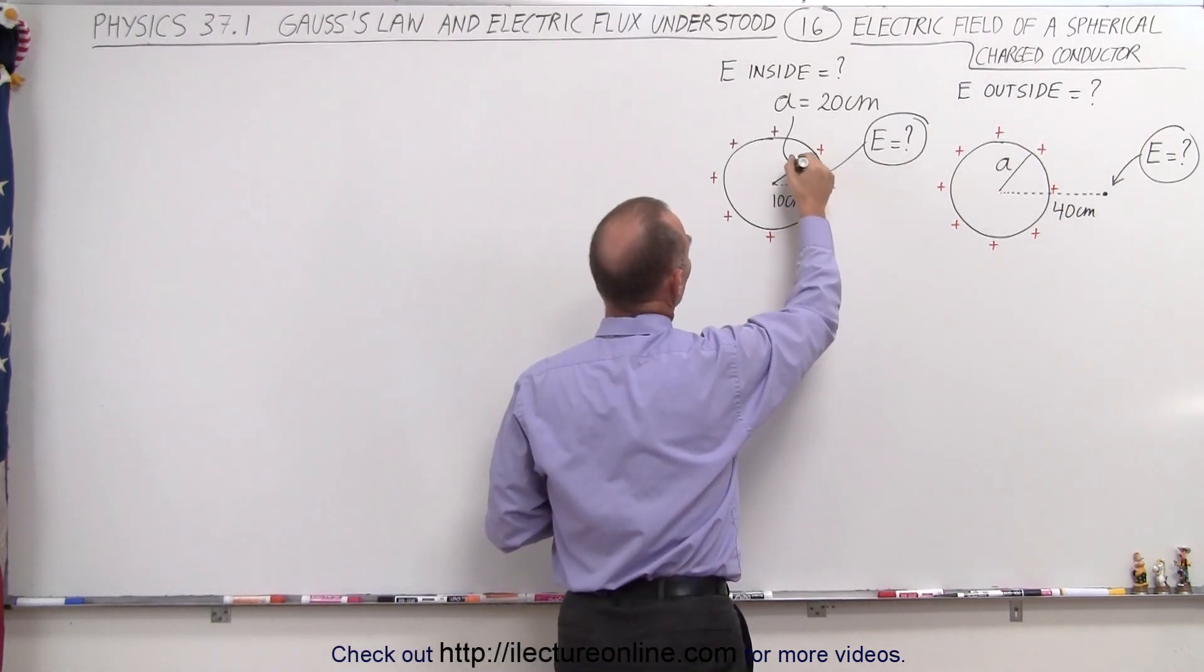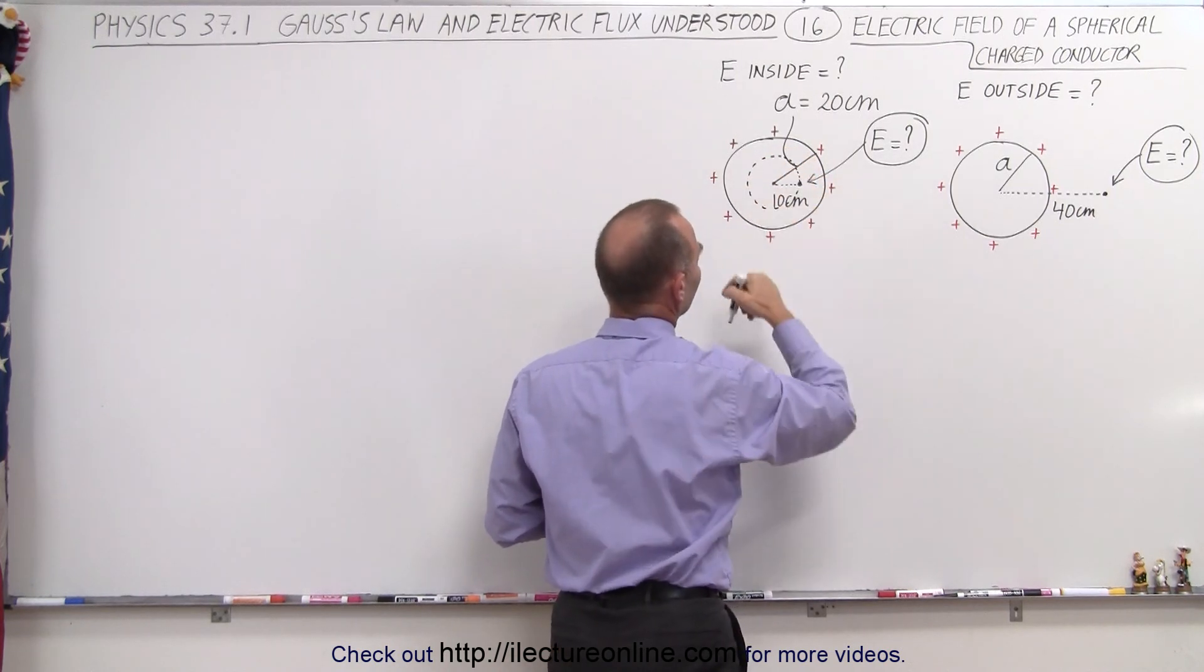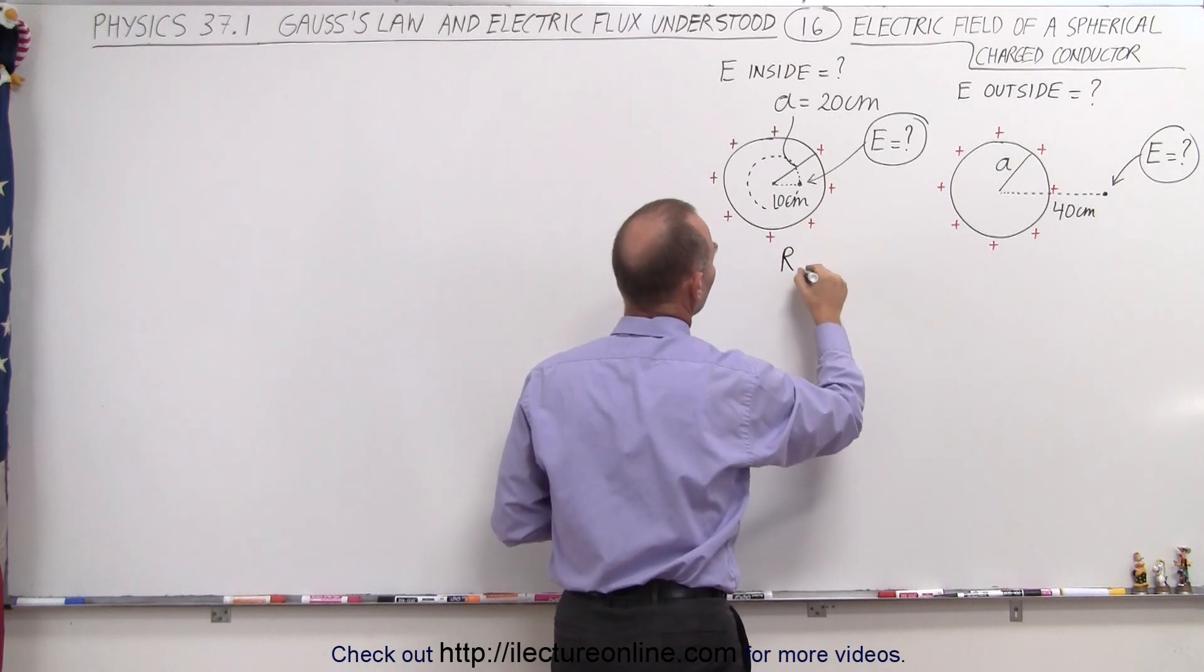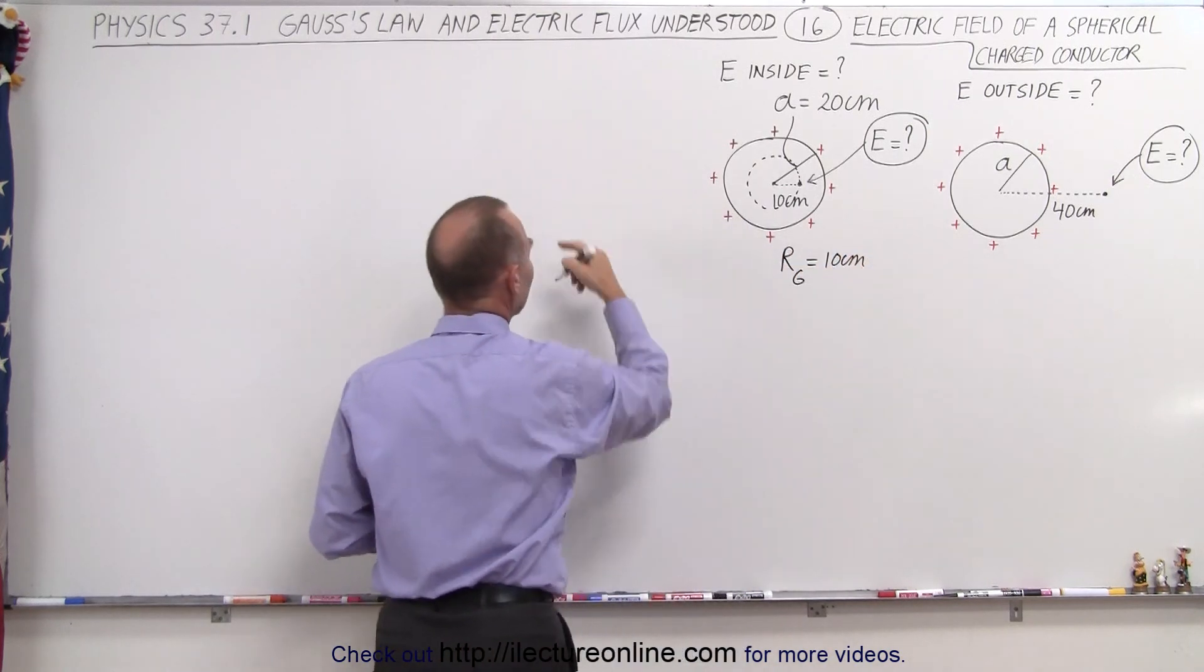So we're going to draw a Gaussian surface like this. The radius of the Gaussian surface is going to be 10 centimeters, so the radius of the Gaussian surface is equal to 10 centimeters.